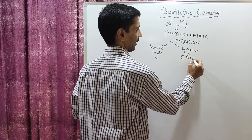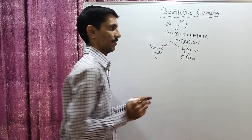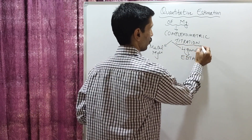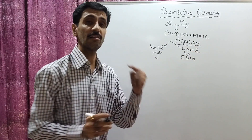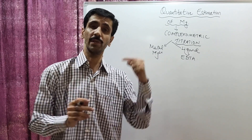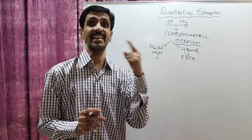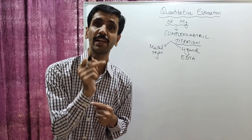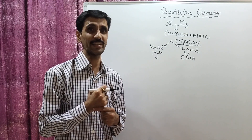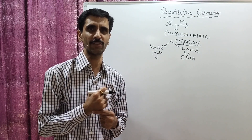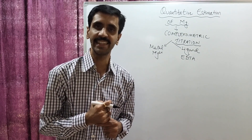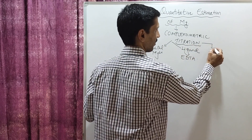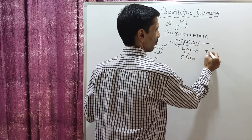EDTA stands for ethylene diamine tetraacetic acid. Because we are using the word titration, we also require a third species — the one which is going to indicate the completion of the reaction. That third species is the indicator.